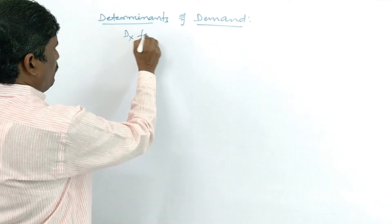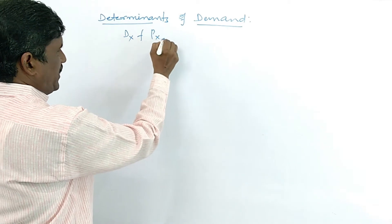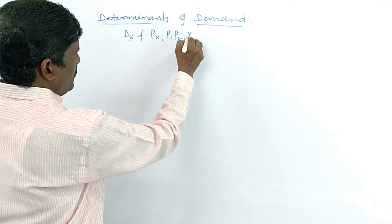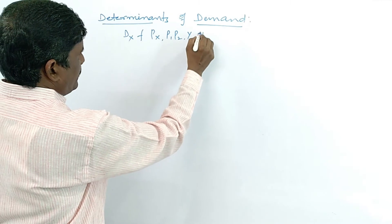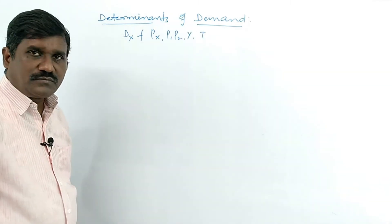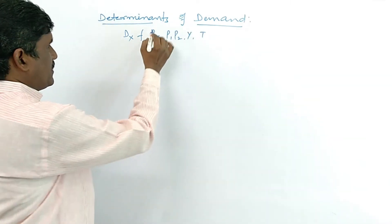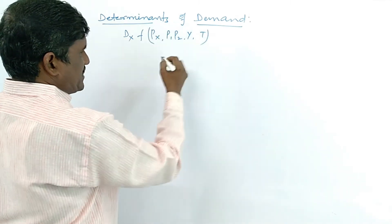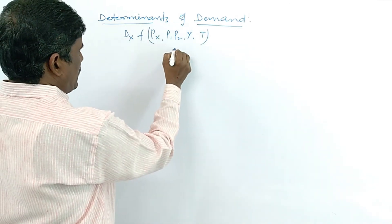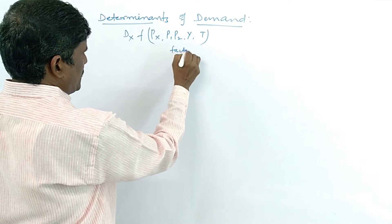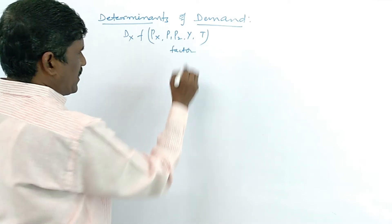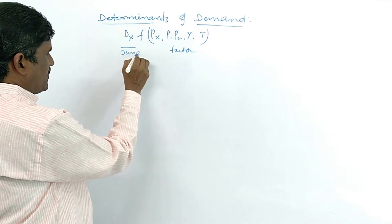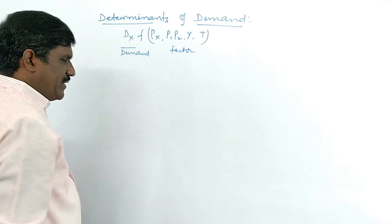Dx is a function of Px, P1, P2, Y, and T. These are our factors — these four are called factors, and Dx is called demand.